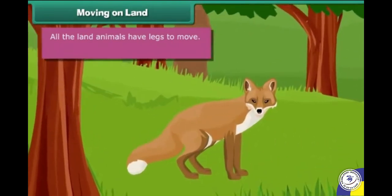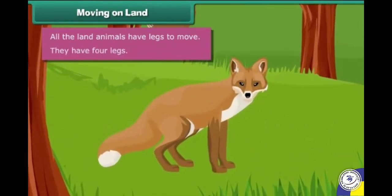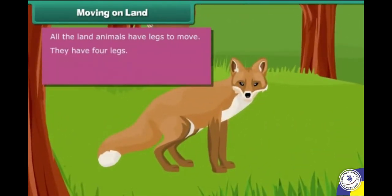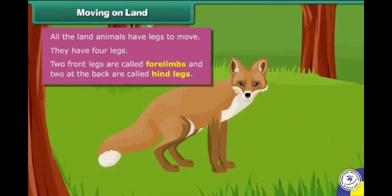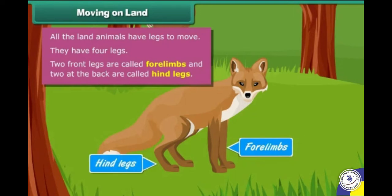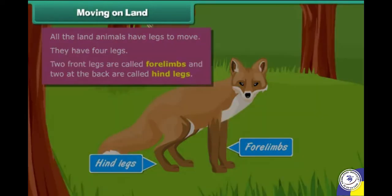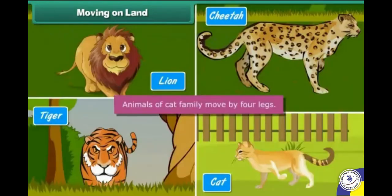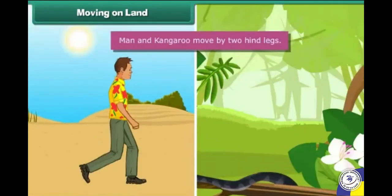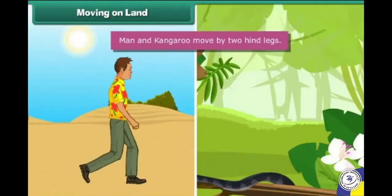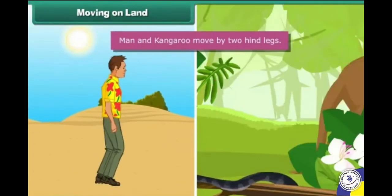They have four legs — two front legs are called forelimbs and two at the back are called hind legs. Animals of the cat family move by four legs. Man and kangaroo move by two hind legs.